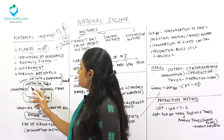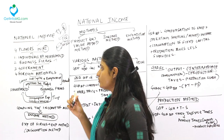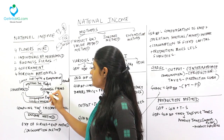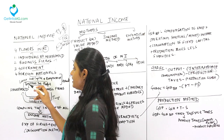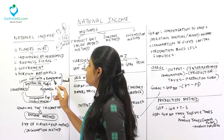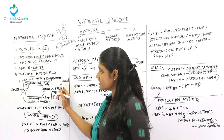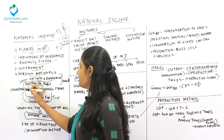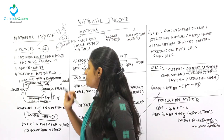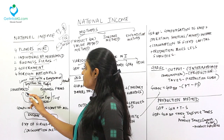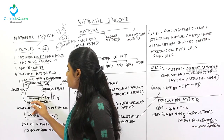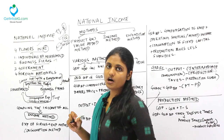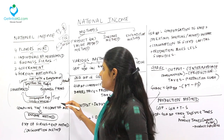For better understanding, we take the relationship between individuals or households and business firms. From the household side, we supply labor, land, capital, and entrepreneurship to business firms. In return, wages are paid for labor, rent for land, interest for capital, and profit for the entrepreneur. On the supply side, households consume the products of business firms, and business firms produce goods and services for households. This is the cycle of our economy which contributes to national income.